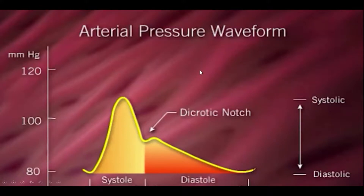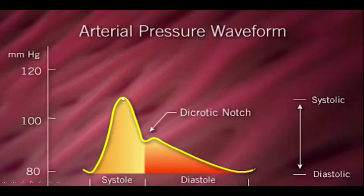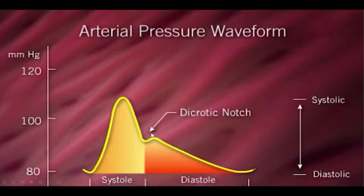Before we talk about the waveform, let's look at an arterial pressure waveform, because that's where the balloon pump waveform plays into. You get a nice spike in pressure during the systolic phase, reading about 115 systolic, and then it plateaus. The diastolic phase starts right after the dicrotic notch, which is created by the aortic valve closing.